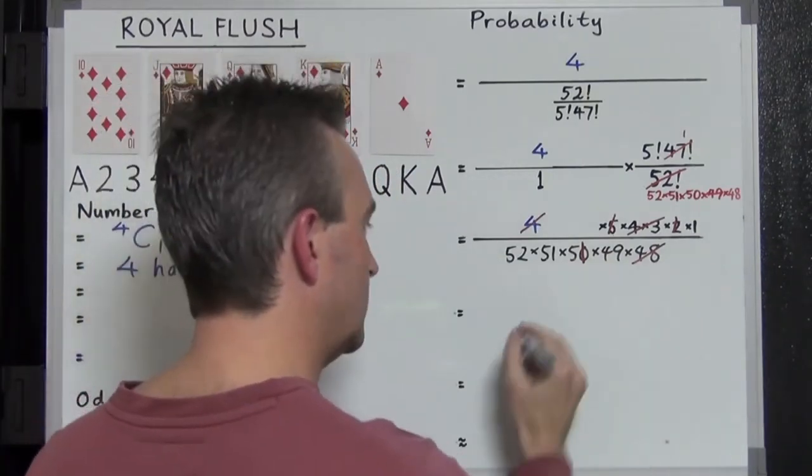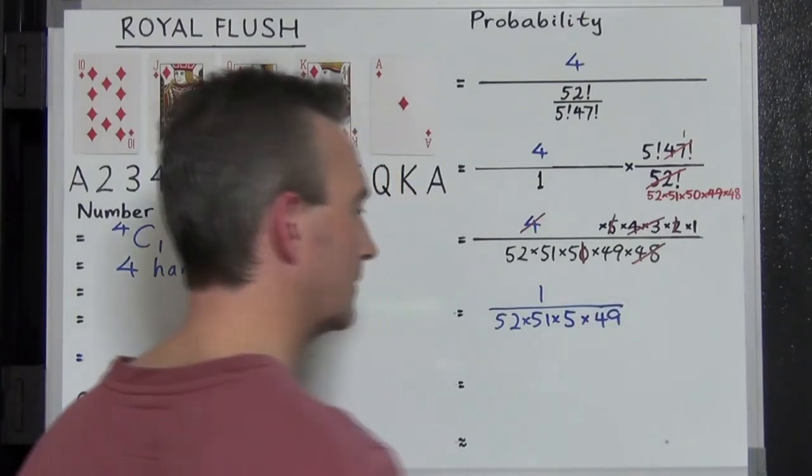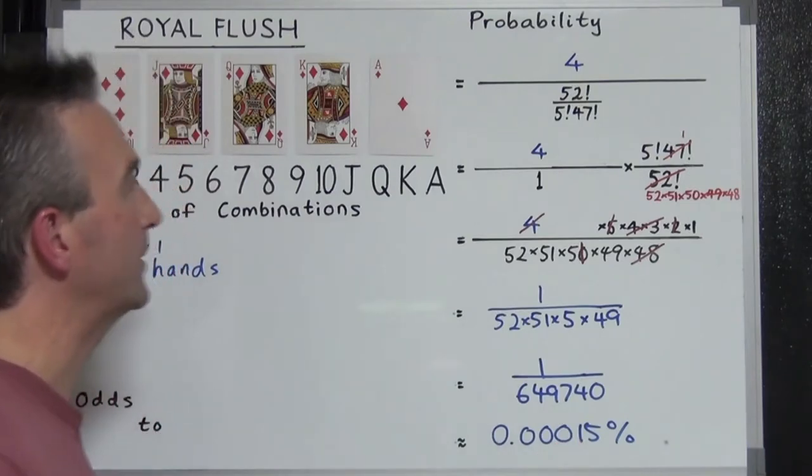All we have on the top is just 1 and on the bottom 52 times 51 times 5 times 49. Doing that on the calculator we get 1 over 649740 and doing that division and multiplying it by 100 we get 0.00015% for the probability. So there's a nice rational fraction and as a percentage you can see that the probability of a royal flush is tiny tiny and minute.